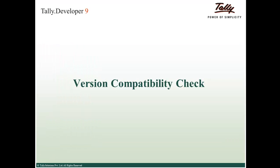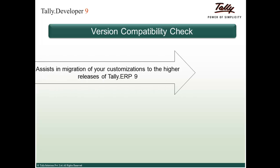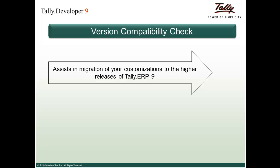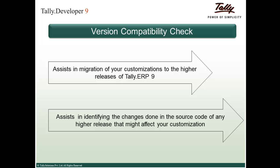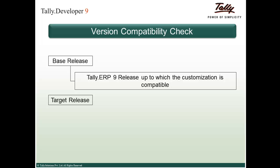Let us first start with an understanding of the Version Compatibility Check feature in detail. The Version Compatibility Check assists in migration of your customizations to function in the latest release of Tally ERP 9, and it helps in identifying changes done in the source code of any higher release that might affect your customization. There are two basic terms to remember: the base release and the target release.